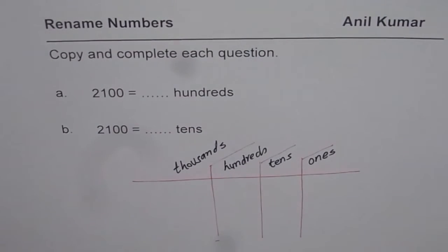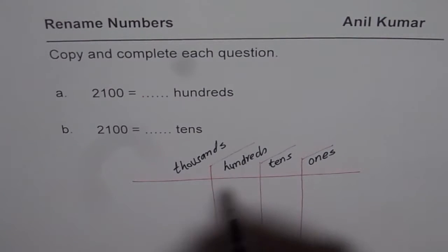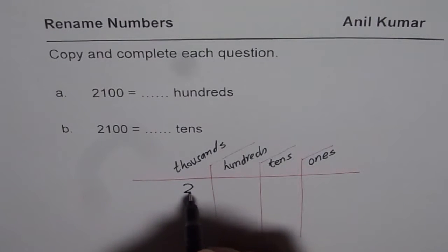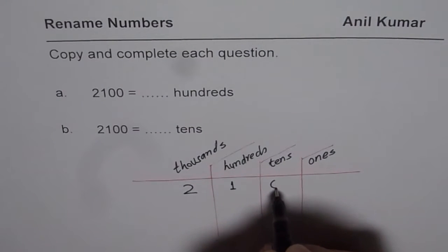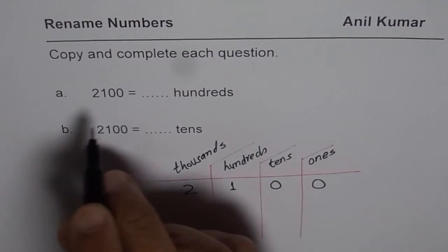Okay. Let me now write down the number 2100. So 2100 that is how it is.